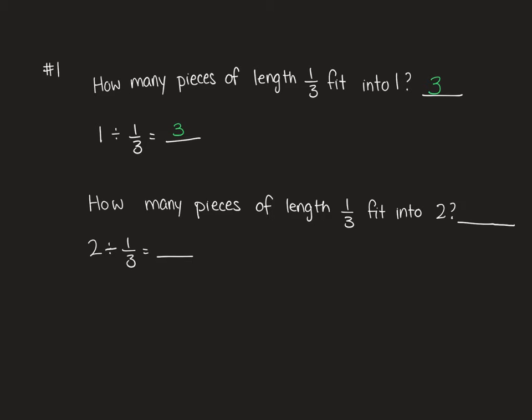If we were looking for how many pieces of length 1 third fit into 2, well, there would be 3 for each meter. So 3 times the 2 meters, which gives us 6. So 2 divided by 1 third is 6.